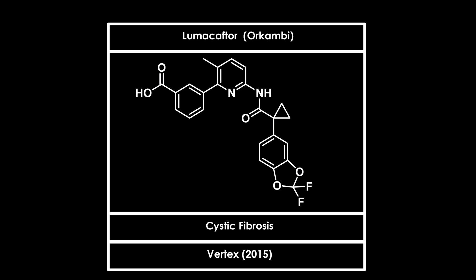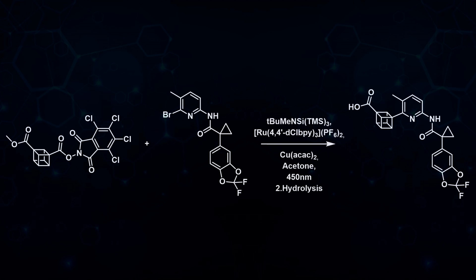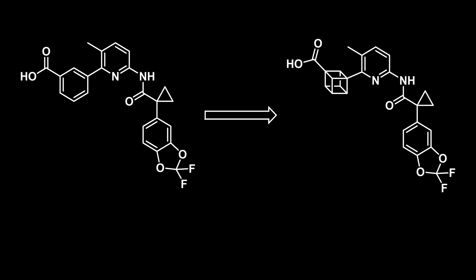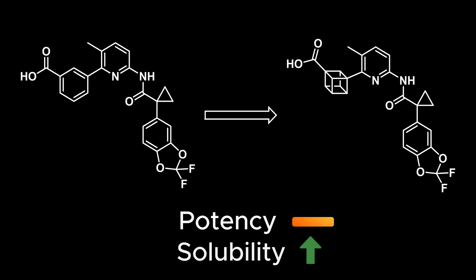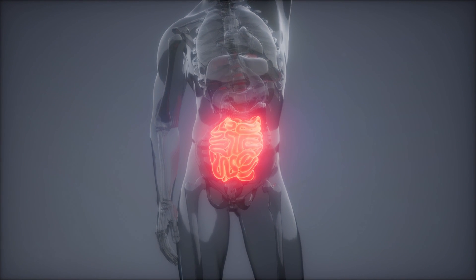This building block was used to make the cubane analogue of lumacaftor, which is used for the treatment of cystic fibrosis. The cubane redox-active ester was generated and used in a photochemical, copper-mediated radical-radical cross-coupling to generate the cubane analogue, which showed similar activity to the parent compound but with improved solubility, especially at low pH, which could improve absorption from the gastrointestinal tract.